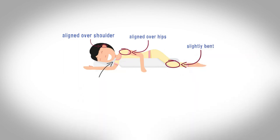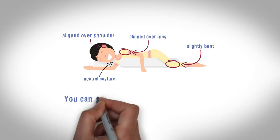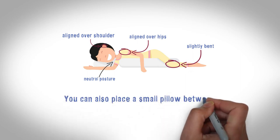Make sure your neck is supported with a pillow that doesn't put your head in flexion or extension. Your neck should be supported in a neutral posture. You can also place a small pillow between your legs to keep your hips level throughout the night.